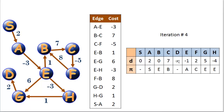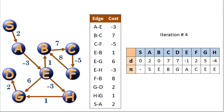E to B with a cost of 1 — we've already factored that in, and the outbound edges from E are not going to change anything anymore. F to B with a cost of 8 — we already have a cheaper route to B and can't improve it by stopping at F. G to D with a cost of 2 — we get to G in 5, so we can get to D in 7 by stopping at G. H to G with a cost of 1 — we were getting to H in negative 4, so now we can get to G in negative 3, which is better than coming via E.